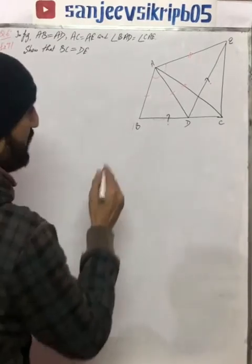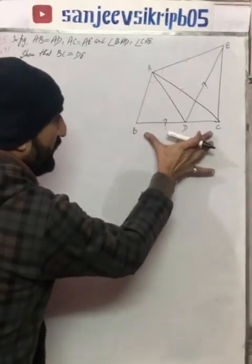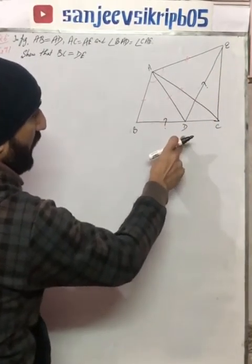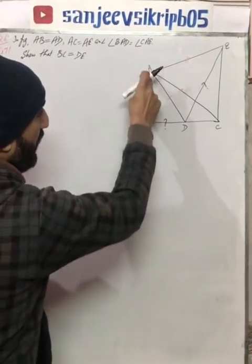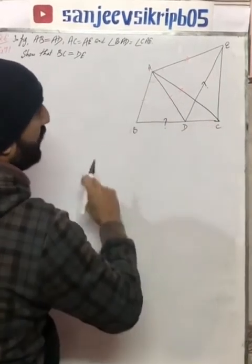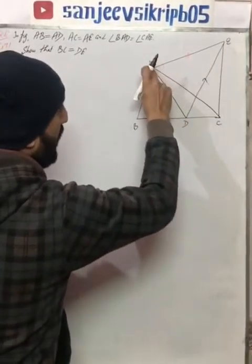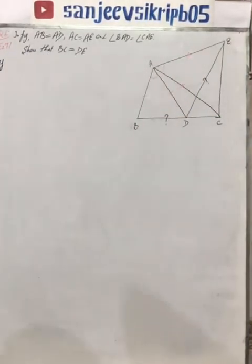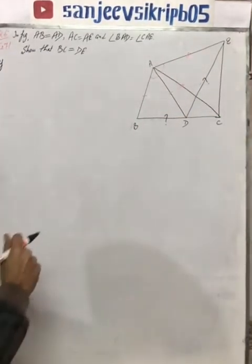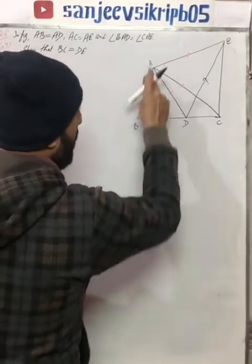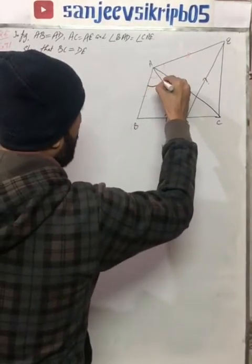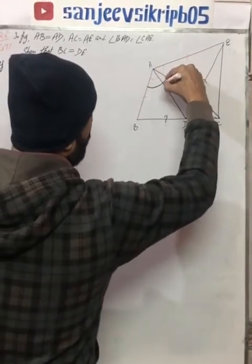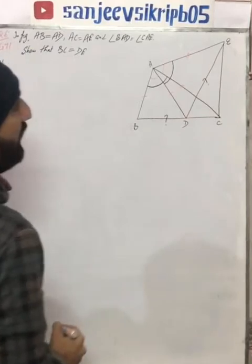First students, we need to prove that BC is equal to DE. If we look at BC, then BC is in triangle ABC and DE is in triangle ADE. So these are the two triangles which we need to prove congruent.